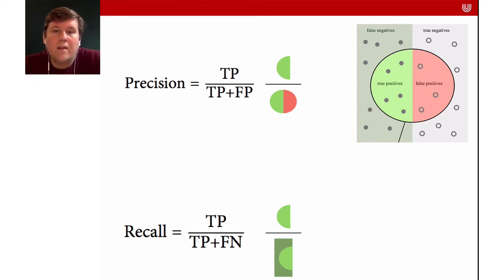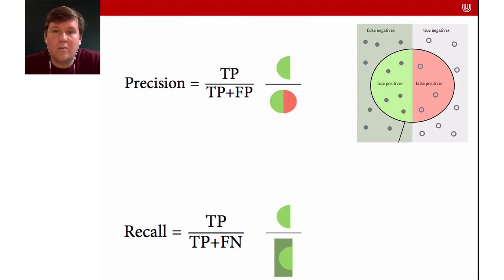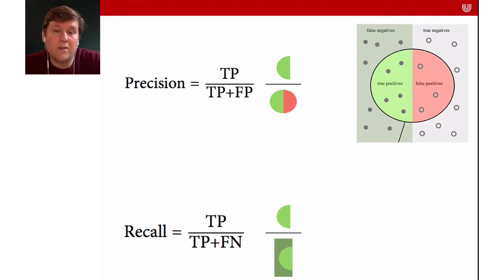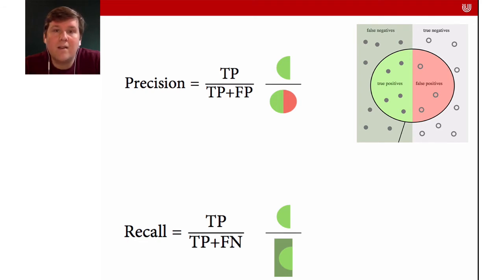Recall is the true positives over true positives plus false negatives — how many of the things we could have predicted were actually predicted. It's related to coverage: precision is how many of our predictions are correct, while recall is how many correct predictions we got out of the ones we could have gotten. This is often more informative than accuracy, because with very few examples for one class, a model randomly guessing one class can have quite high accuracy even though it performs no better than chance.